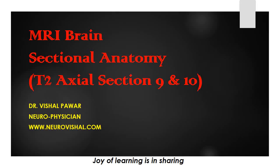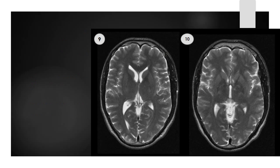In this video I am going to discuss MRI brain with respect to sectional anatomy. Here I will discuss cut number 9 and 10, and enumerate all the structures seen in those two cuts.